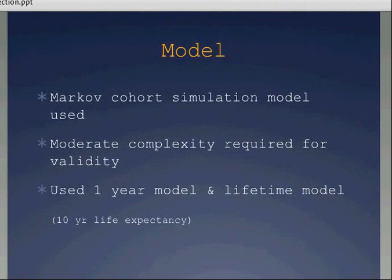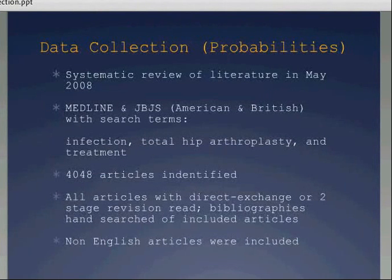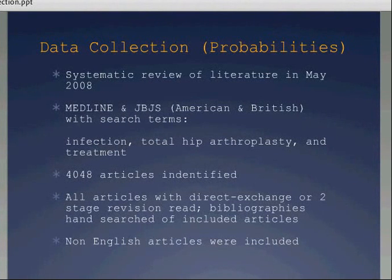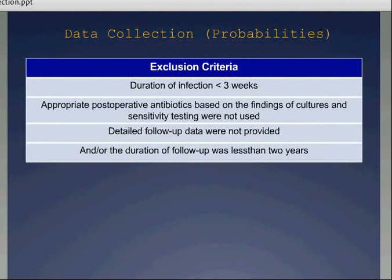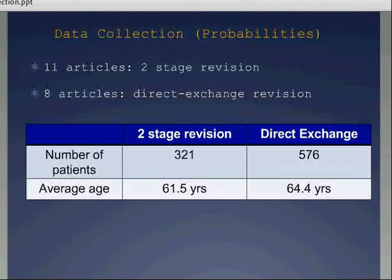They performed a systematic review of all literature in May 2008 from Medline and JBJS, using the search terms: infection, total hip arthroplasty, and treatment. They identified 4,048 articles and reviewed them all, highlighting those with direct exchange or two-stage revision. They went through all bibliographies and included non-English articles. They excluded articles with infection duration under three weeks — so this group focused on chronic infection — excluded cases where appropriate post-op antibiotics weren't given, and excluded those without follow-up data of at least two years. They found 11 articles on two-stage revision and eight on direct exchange, with 321 patients in the two-stage group and 576 in the direct exchange group.